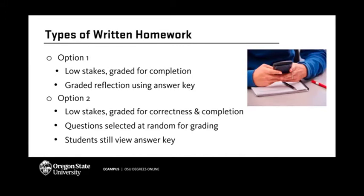Option two is a written homework where a subset of the problems students turn in are randomly selected and graded for correctness, and the remainder are graded for completion. It's still a low-stakes assessment and students still have access to the answer key.